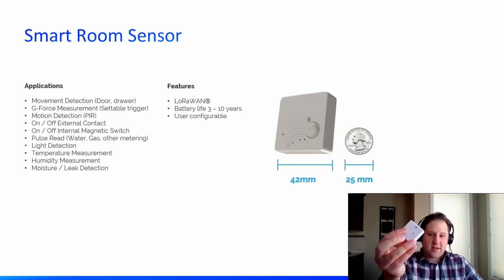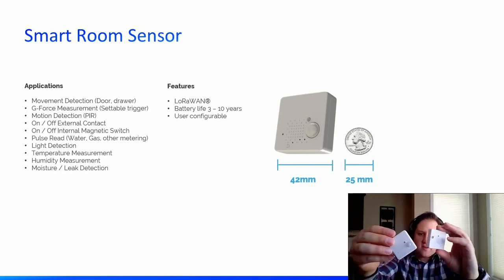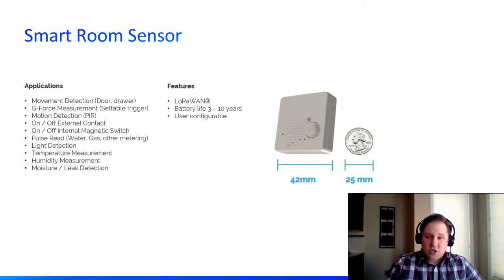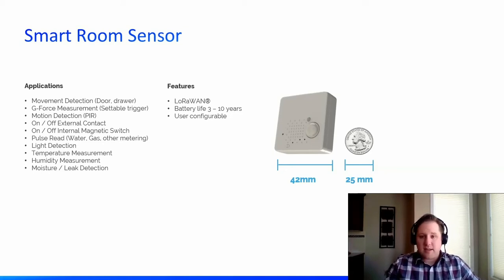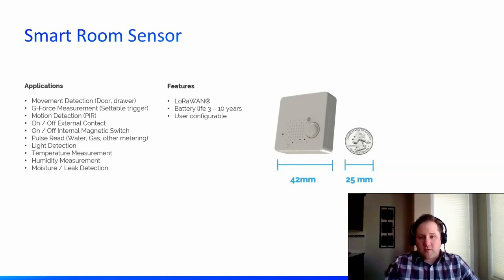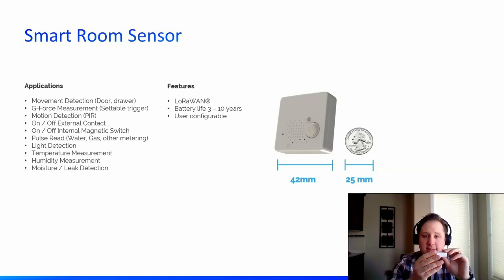Moving on to the devices — this is our smart room sensor. This device truly is one of the most versatile LoRaWAN devices on the market today. It was designed for the smart building vertical and is a very comprehensive product that can deliver information about a whole range of events happening in your indoor environment, delivering that through LoRaWAN into your network. The device has an accelerometer to measure if something's moving, if a drawer is opening or closing, and it has impact detection to measure the strength of that movement.